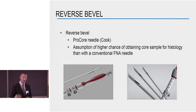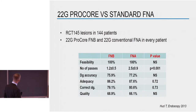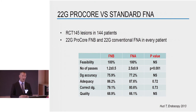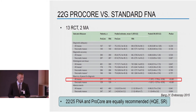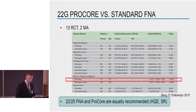The first FNB needles available were the reverse bevel ProCore needles, with a special shape expected to shear tissue into the hole via the reverse bevel. We did a large randomized study of over 140 patients, each biopsied with both a conventional FNA needle and the ProCore FNB needle. We saw no differences in the important parameters except we were able to reach our diagnosis with a fewer number of passes. This was reproduced in many other studies. Two meta-analyses confirmed the only difference is a decreased number of passes with the ProCore needle. The recommendation is that you can equally use both.